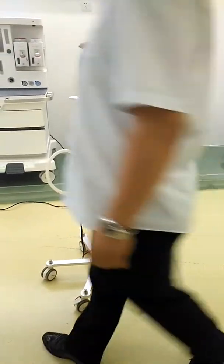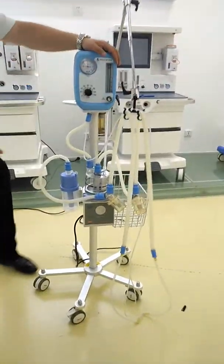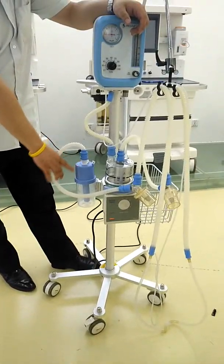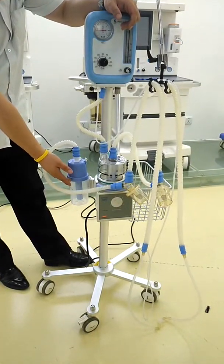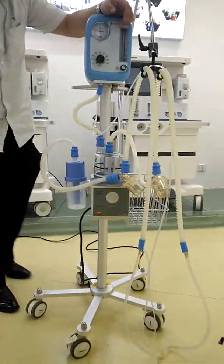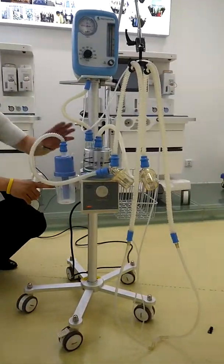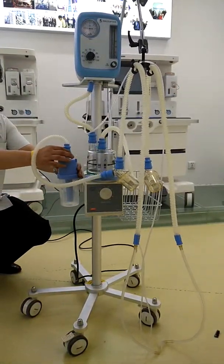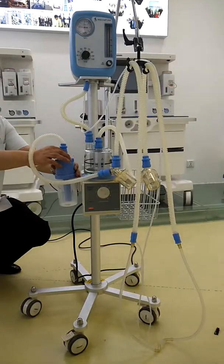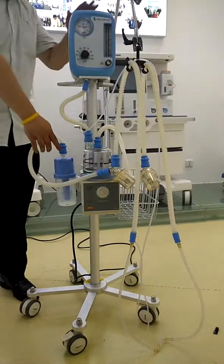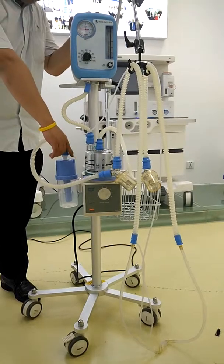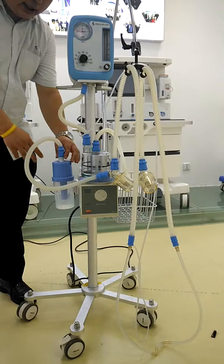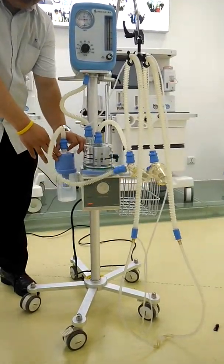For the principle of this machine, as we call it a bubble CPAP, this part is very important. This one is for adjusting the pressure using a water column. Inside you can put water in, and you can see there is a line. The water should not be above this line. With this white item we can adjust the pressure from 1 to 10 centimeters water pressure.